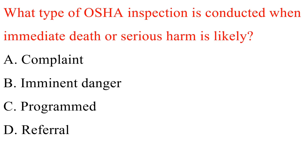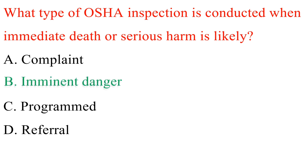Question. What type of OSHA inspection is conducted when immediate death or serious harm is likely? A. Complaint. B. Imminent danger. C. Programmed. D. Referral. Answer: B. Imminent danger.